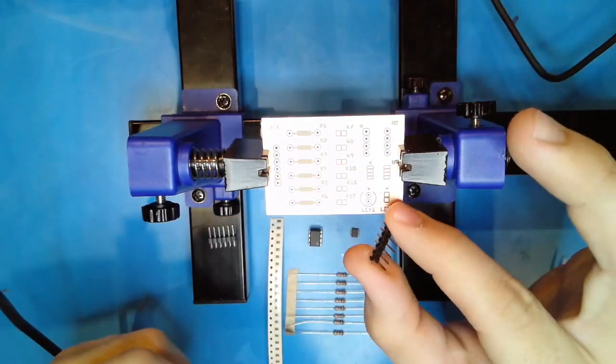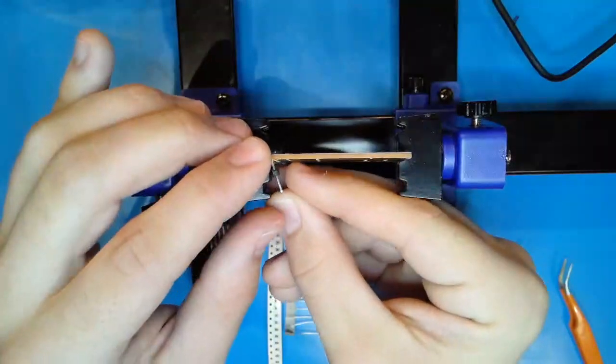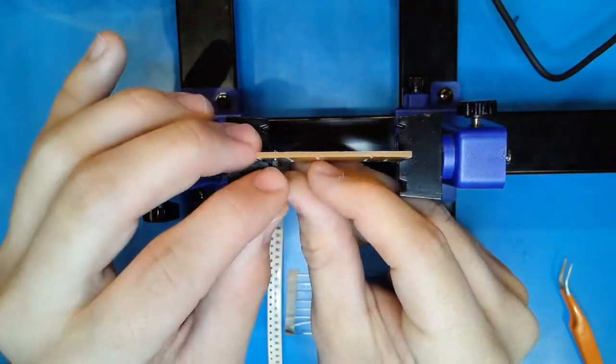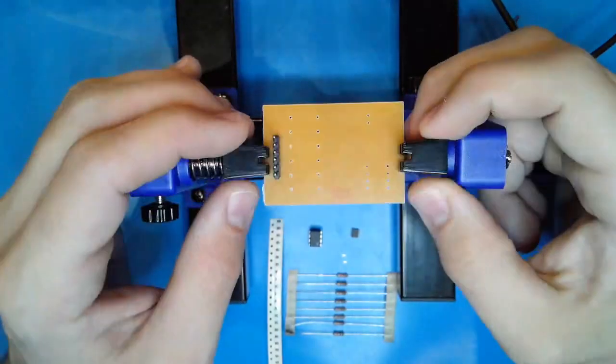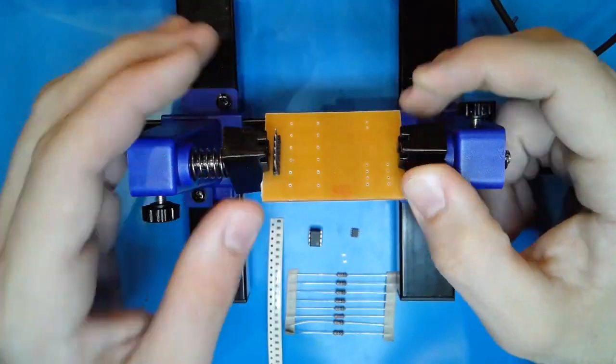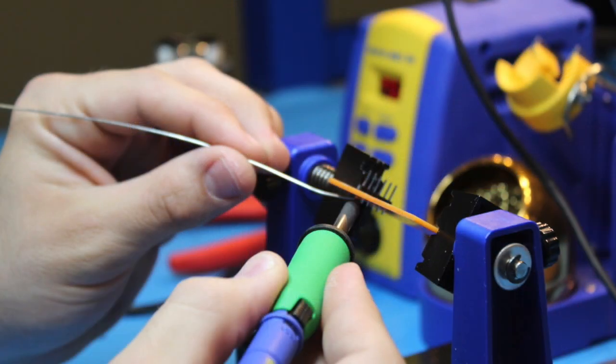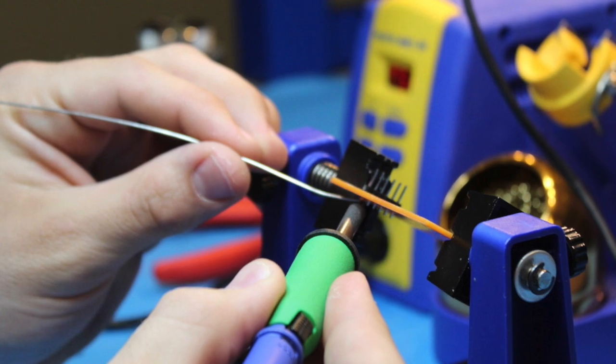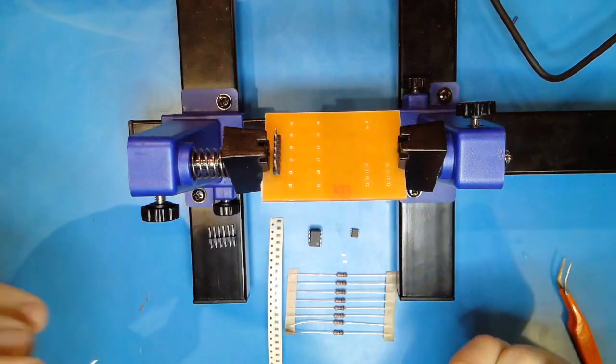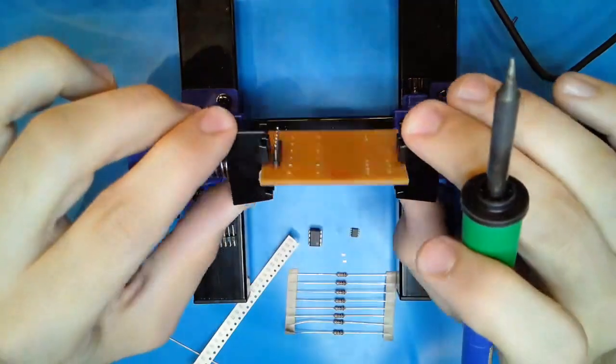If you are soldering a component that can't bend to make a mechanical connection, like headers, maneuver your workpiece so that you can apply a little bit of solder to one end. Once cooled, flip it over and continue as normal.